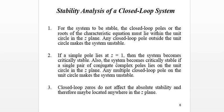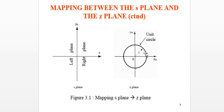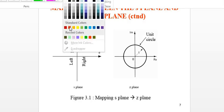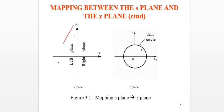This is the mapping between the s-plane and the z-plane. In the s-plane, any poles located on the left side are considered stable. In the z-plane, any poles located inside the unit circle are stable.